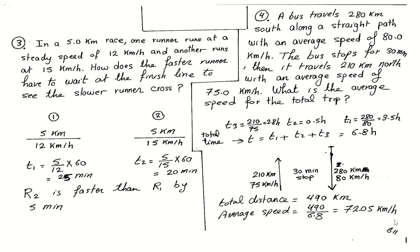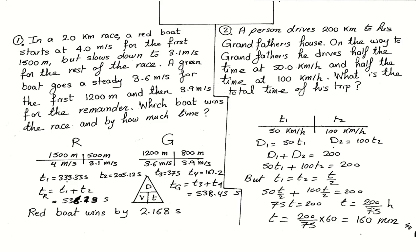We must be careful: the bus moved south then north, so some might think to use negative and positive distances and subtract. However, the problem asks for average speed, not velocity — so we do not include direction. We use the magnitude of each distance: 280 plus 210 = 490 kilometers. The final answer is 72.05 kilometers per hour.